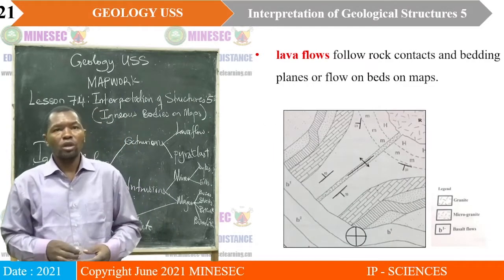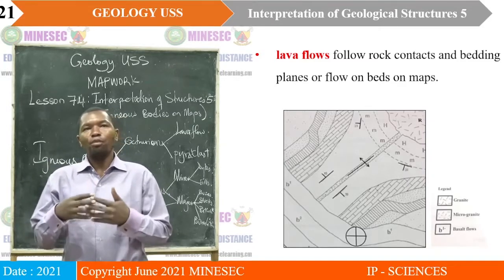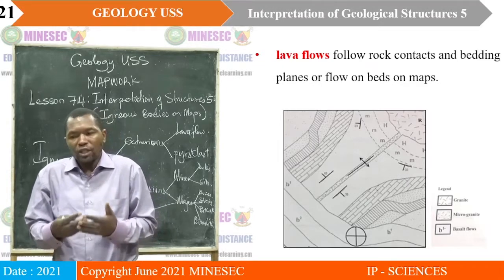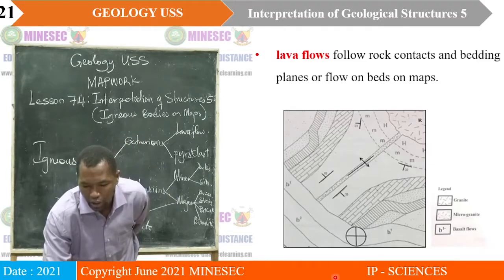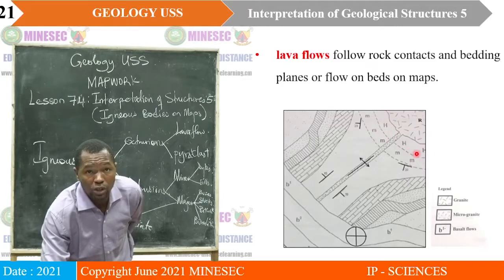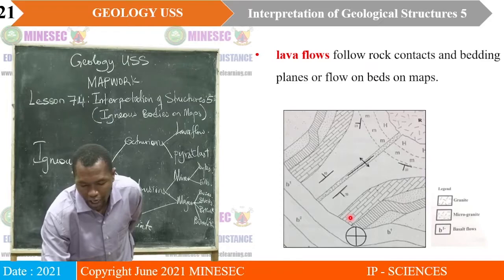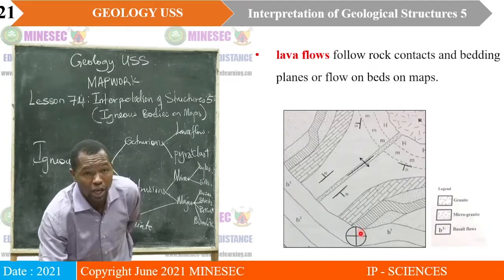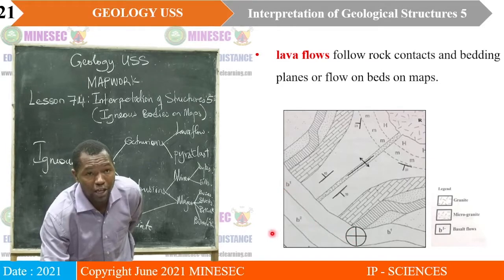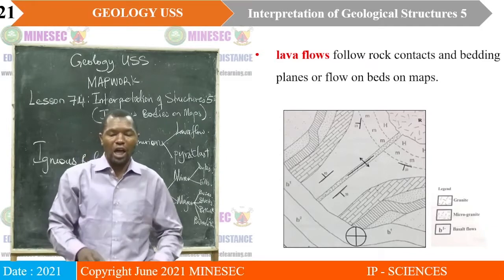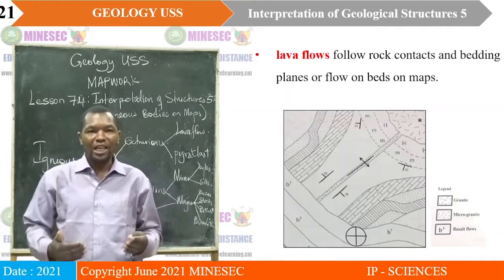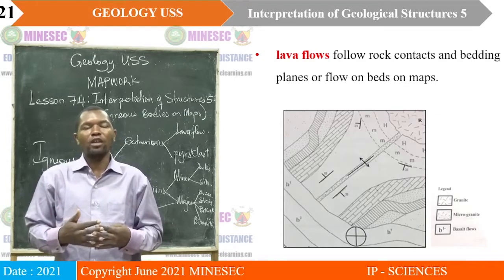Lava flows follow rock contacts and bedding planes, or they may even flow on beds when you see them on maps. At the northeast portion of the map, this structure is basaltic in composition — that is a micro-granite. At the southwest portion of the map, this material is lying horizontally with a cross mark, and that is basaltic, so that is indication of lava flow.